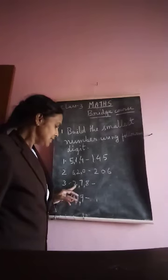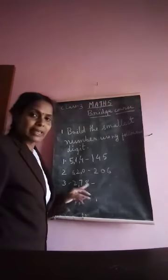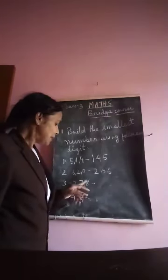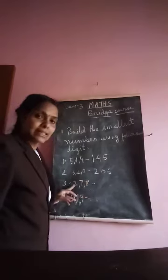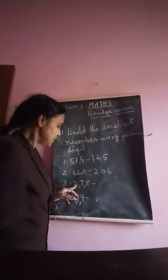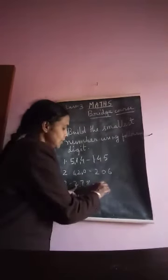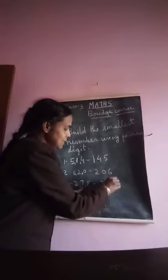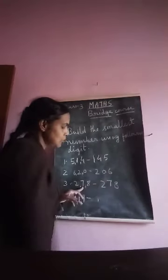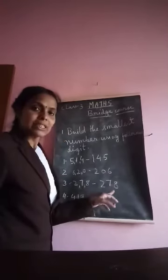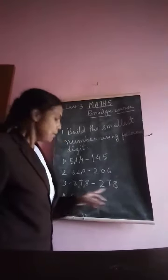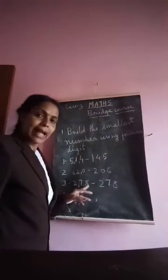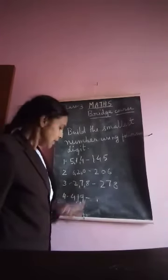Digits are 2, 7, and 8. We have to make the smallest number. The smallest digit here is 2, then 7, then biggest is 8. So 278 is the smallest number built using digits 2, 7, and 8.